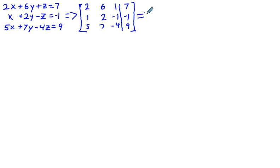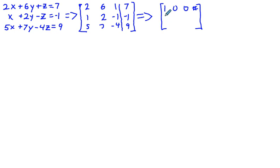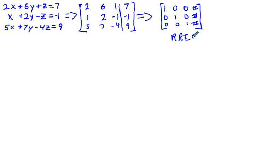Through the process of elimination we convert to a form called reduced row echelon form, which looks like: first row 1, 0, 0 and a number; second row 0, 1, 0 and a number; third row 0, 0, 1 and a number. When we reduce the coefficients to this RREF, you have the solutions to the system.